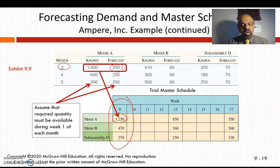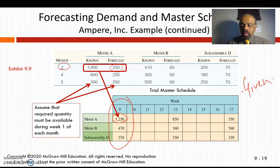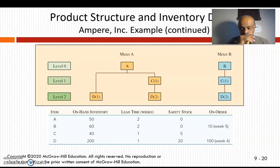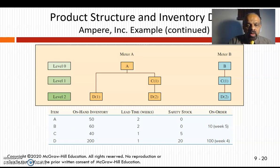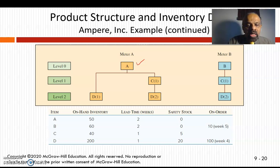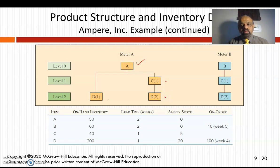When doing MRP, the first thing is to build the product tree — all this structural data is given to you. Product A requires one D and one C, and each C requires two D's. Product B requires one C and two D's. This bill-of-materials tree structure is provided as part of the problem.